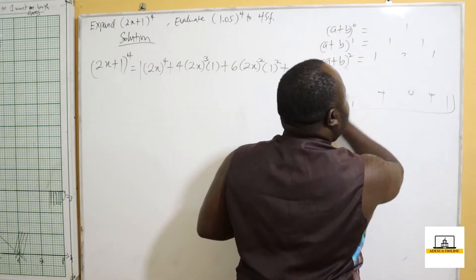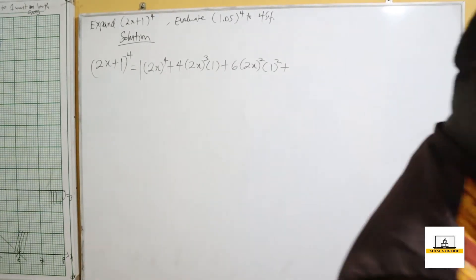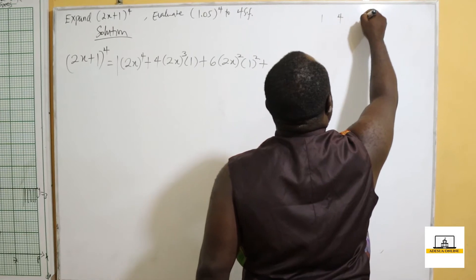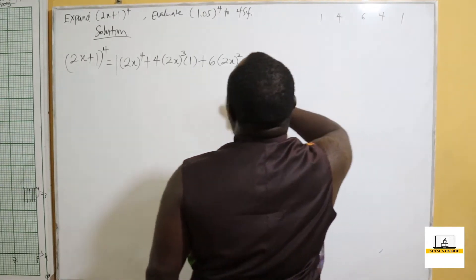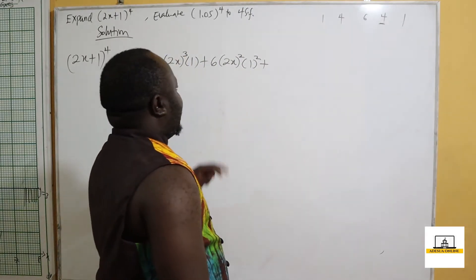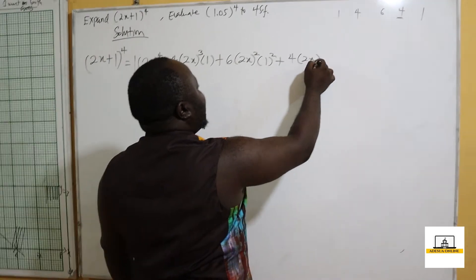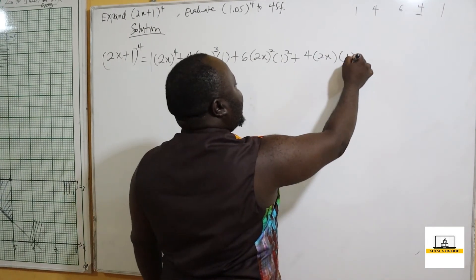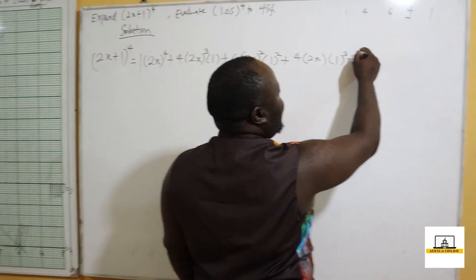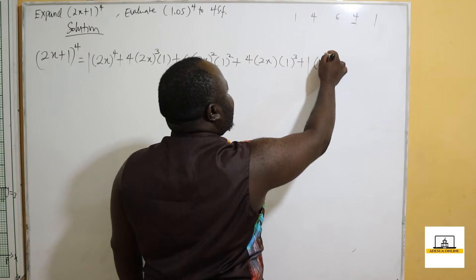Let me write the coefficients clearly: 1, 4, 6, 4, 1 for the power of 4. The fourth term has coefficient 4: we write 4 times (2x)^1 times (1)^3. The last coefficient is 1: giving (2x)^0 times (1)^4.